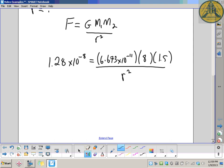Simplify a little bit. 1.28 times 10 to the negative 8 on the left, multiply by r squared. I just cross multiplied there, brought that r squared up to the other side. On the right hand side, 6.673 times 10 to the negative 11 times 8 times 1.5.